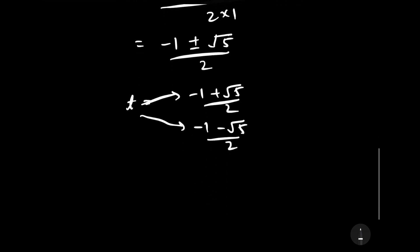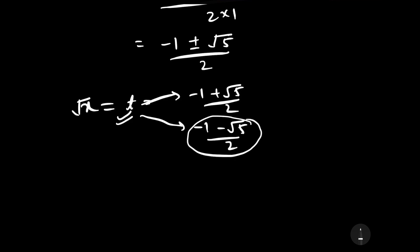Since t equals √x and x is greater than 0, t must be a positive number. The second value (−1 − √5)/2 is negative, so we ignore that solution and consider only t equals (−1 + √5) / 2.